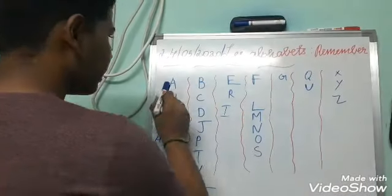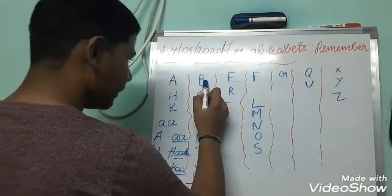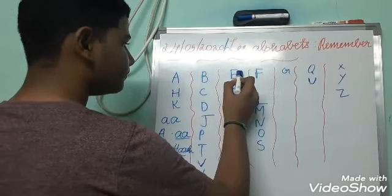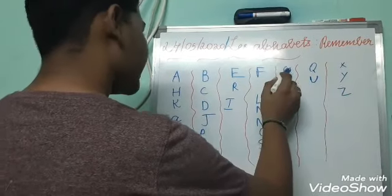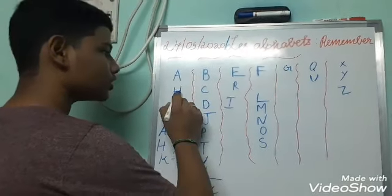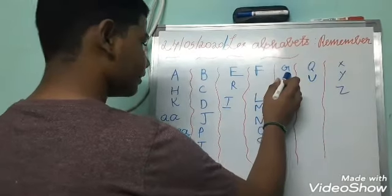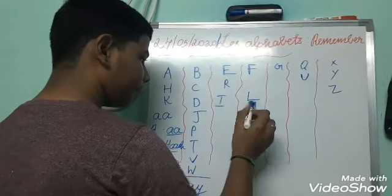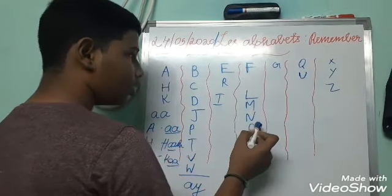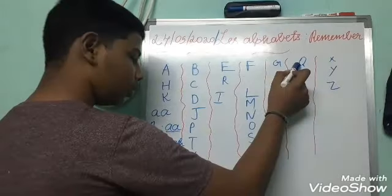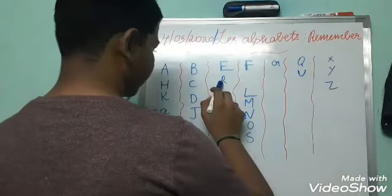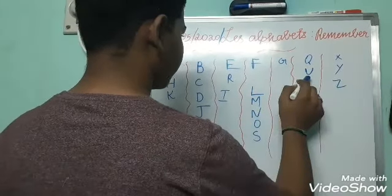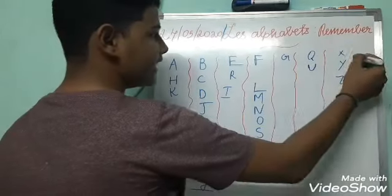Let us revise the alphabets once again: A, B, C, D, E, F, G, H, I, J, K, L, M, N, O, P, Q, R, S, T, U, V, W, X.